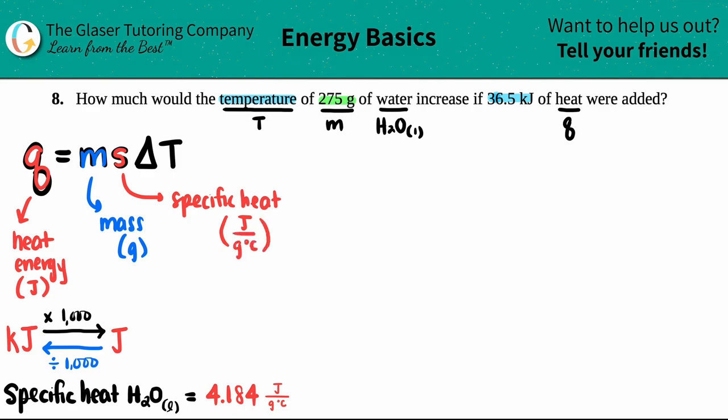In this case, we're talking about water, H2O liquid. Now they didn't tell us a specific heat of the water. Some professors or teachers make you memorize that specific heat. They usually only make you memorize the water one, but I put it down here for you guys. It's 4.184. And that's only for liquid water. This is not the same number for solid water.